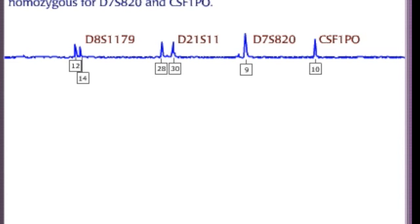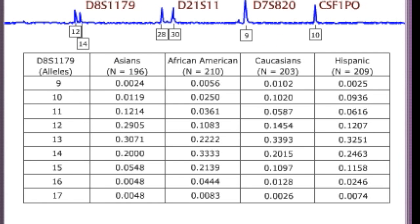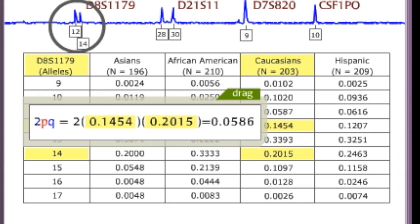For example, here is the readout for one person that shows 4 of the STRs used in DNA profiling. Let's first look at D8S1179. The table below shows some of the allele frequencies for D8S1179 in different populations. The frequencies vary for different groups. Using the Hardy-Weinberg equation, let's calculate the frequency of a Caucasian being heterozygous for D8S1179 for alleles 12 and 14.